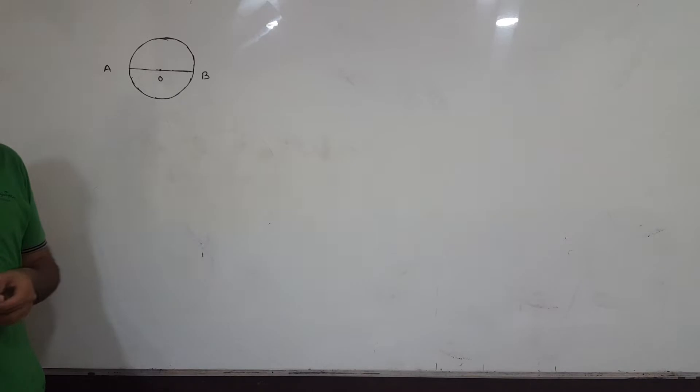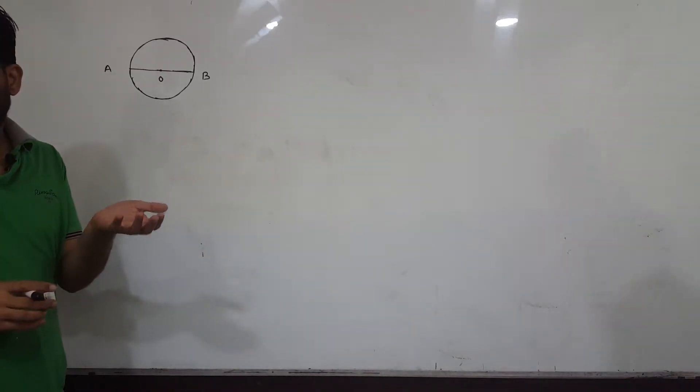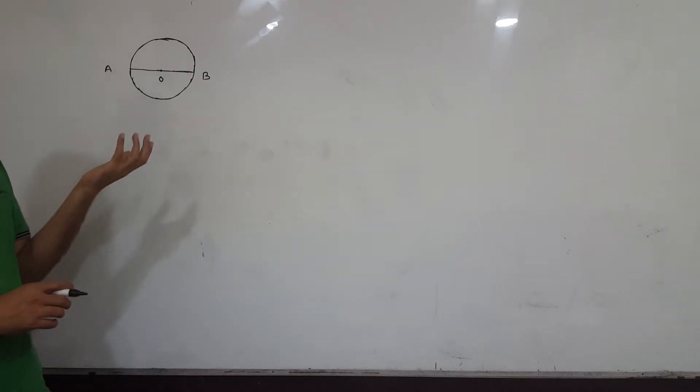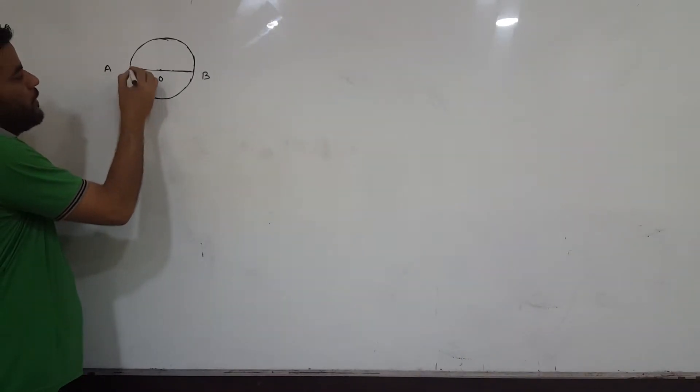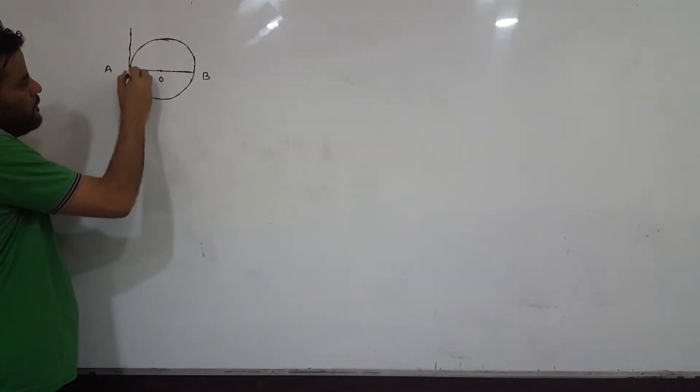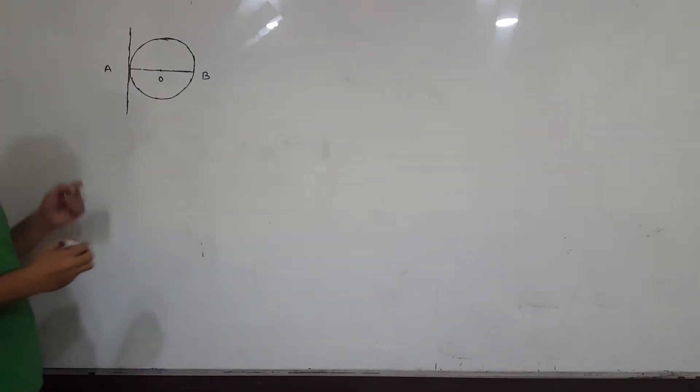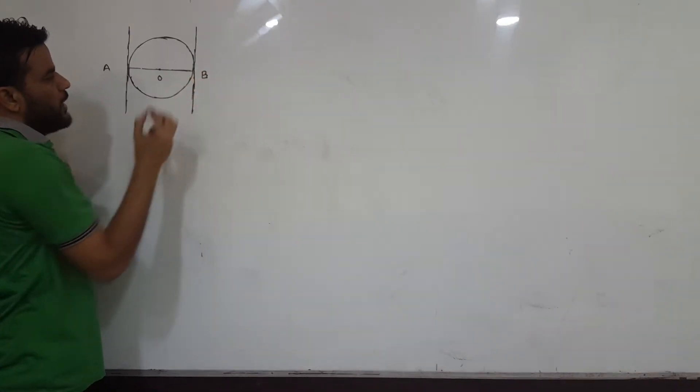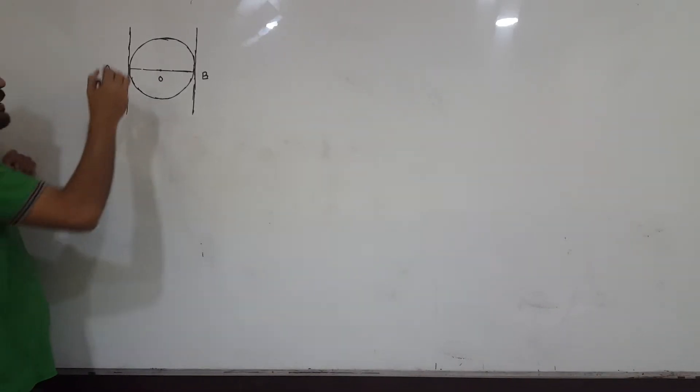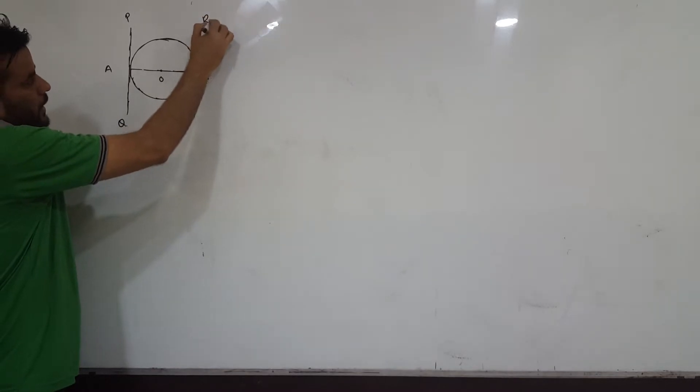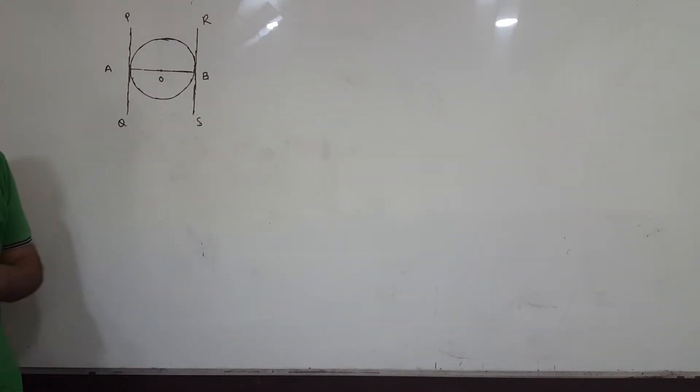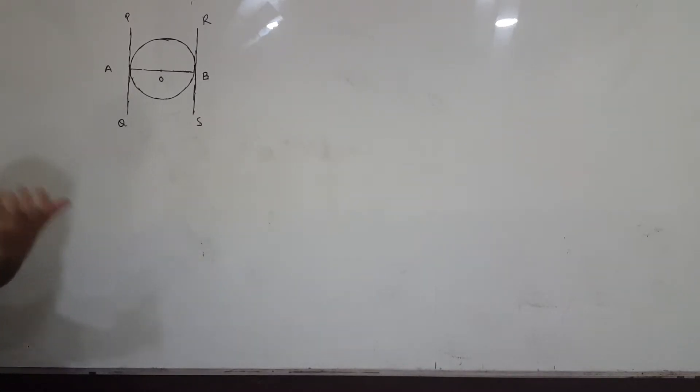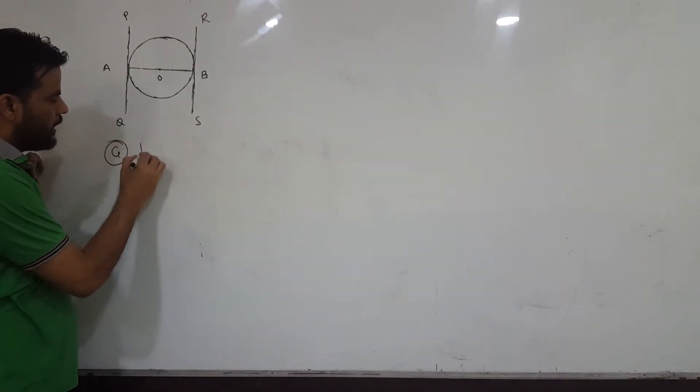What do we need to prove? Tangents drawn at the endpoints of the diameter. So the diameter has one endpoint here, where you have drawn this tangent, and then you have drawn this tangent at the other endpoint.